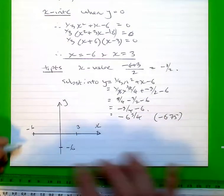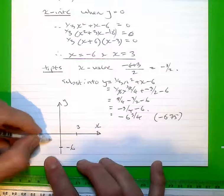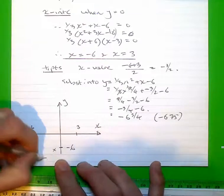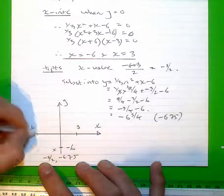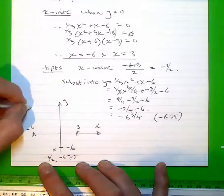And let me move that up so you can see. The turning point negative three over two. We can then sketch the graph fully.